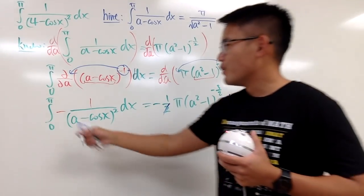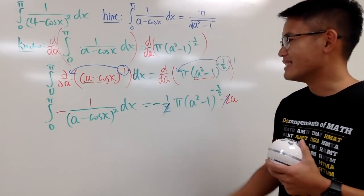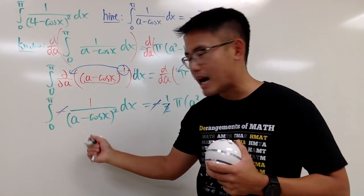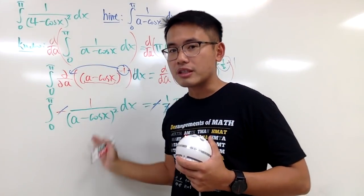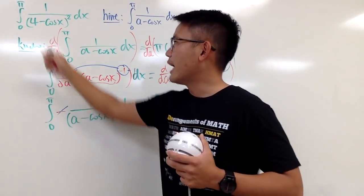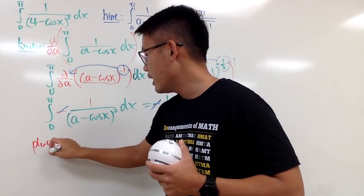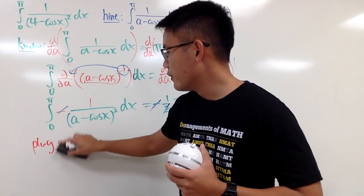And, in fact, we have negative on both sides. So, if you would like to cancel this out. And, all I need to do now, because you see, we pretty much have the same form, except a has to be 4. So, I will just say, plug in a equals to 4.